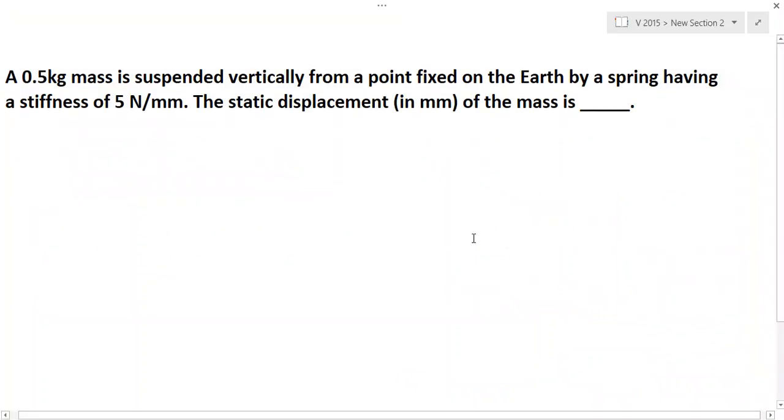A 0.5 kg mass is suspended vertically from a point fixed on the earth by a spring having a stiffness of 5 newton per mm. The static displacement of the mass - we're asking for static displacement. k × δ = F, where F is nothing but m × g. This is the formula where k is the spring stiffness, δ is the static displacement or deflection, and F is the force which equals mass times acceleration g.